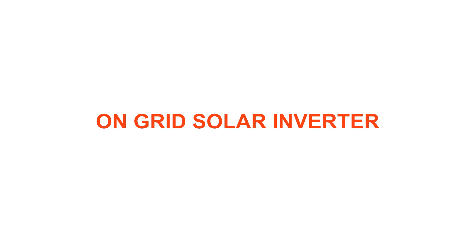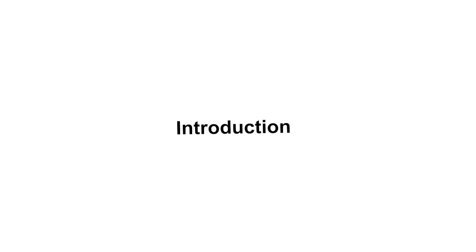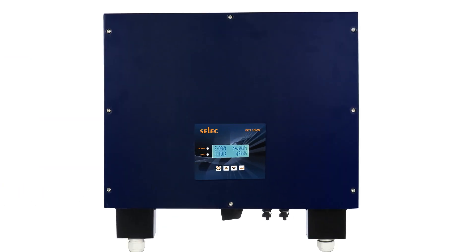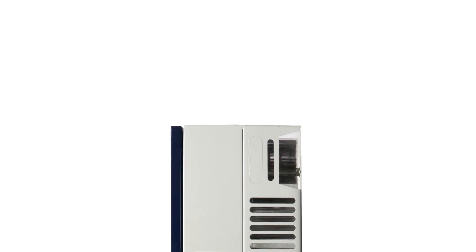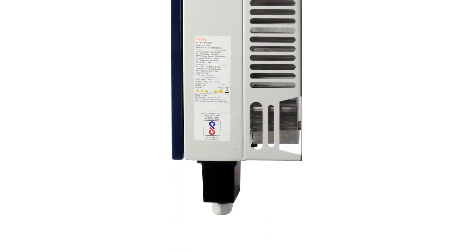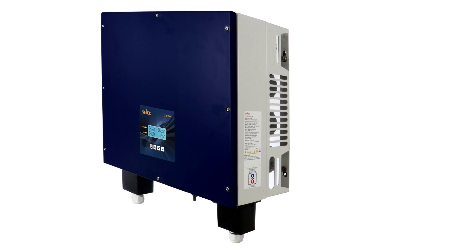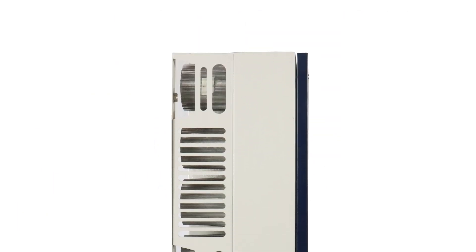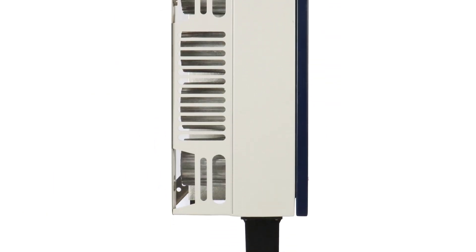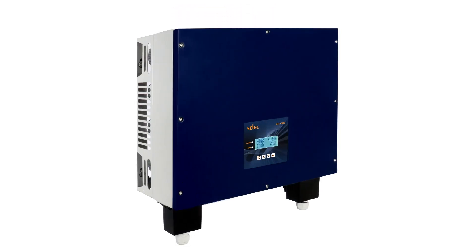Introducing the Select on-grid solar inverter. This is a short video on the Select 10 kilowatt inverter. This inverter comes with industry-leading features and BIS certification. This product is used in solar power plants to convert DC power absorbed by PV panels into AC power, which can be used for industrial and residential purposes.